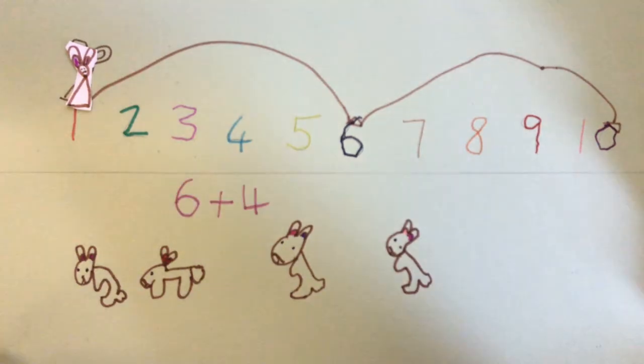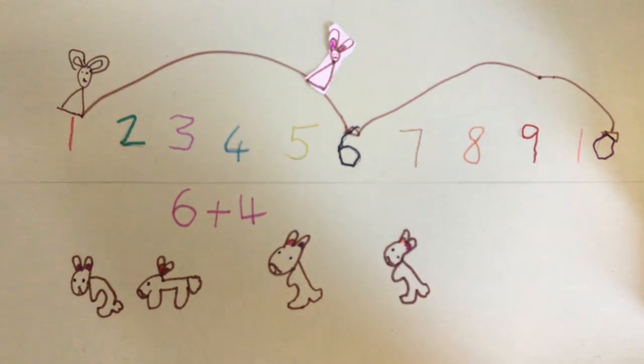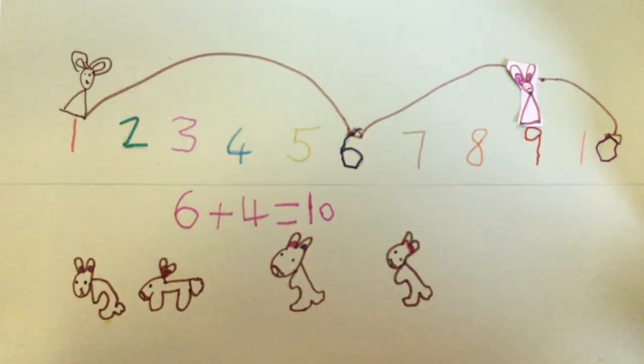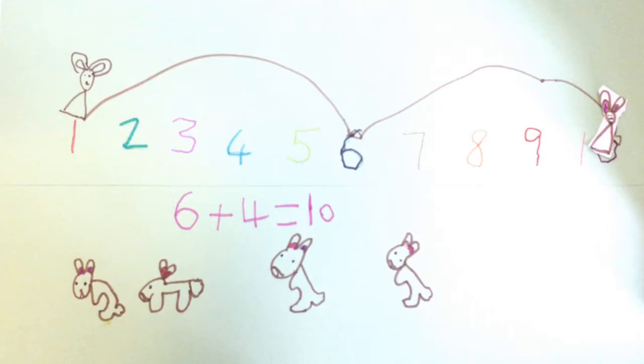6 add 4. Count on from 6. 1, 2, 3, 4 equals 10.